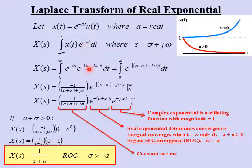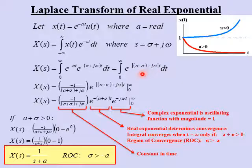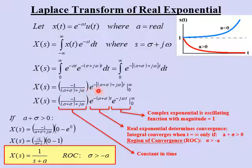The step function u of t allows us to change the limits of integration from negative infinity to infinity, to zero to infinity, since the step function only exists for positive values of t. We then combine the exponents in the two exponential functions by adding them together and factoring t outside the brackets. This integral is now a simple exponential that we can integrate easily. The result is negative one over a plus sigma plus j omega, times the exponential function, evaluated from zero to infinity.